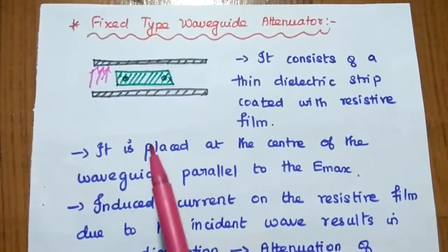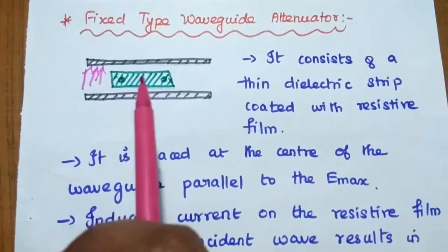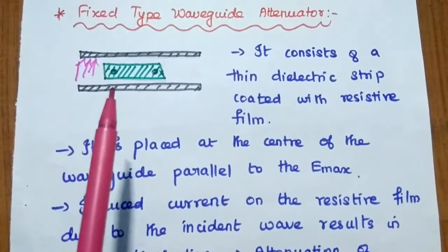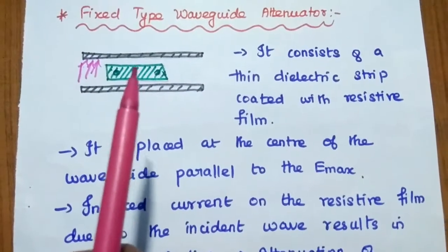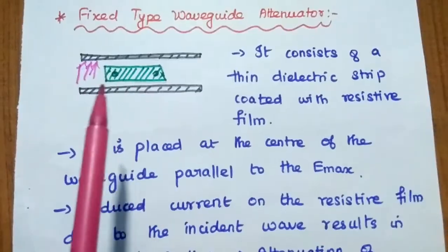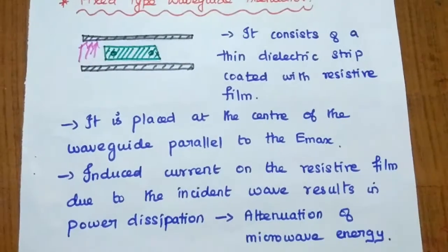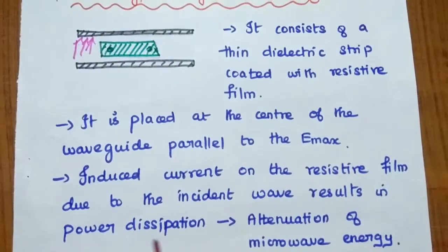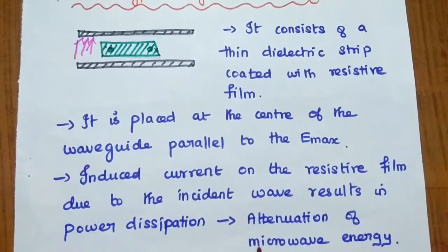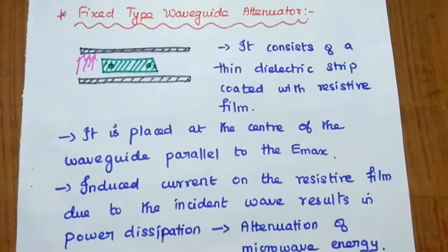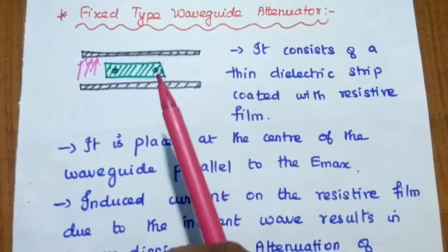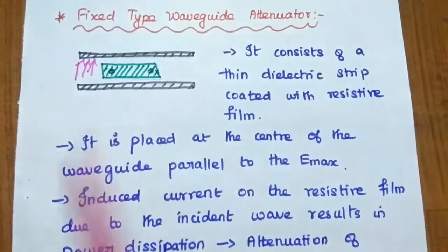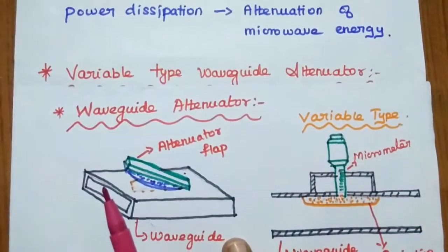How is the loss obtained? The electric field passing through this resistive film induces a current. This resistive film produces some heat, and by this way we introduce attenuation. The induced current on the resistive film due to the incident wave results in power dissipation in the form of heat — that is attenuation of microwave energy. Since we place this resistive film once inside the waveguide and do not touch it again, it produces a fixed amount of attenuation.